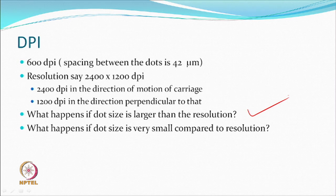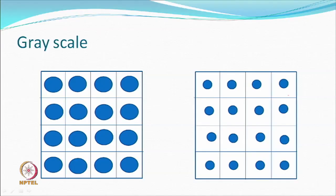If the drop size is very small compared to the resolution, you will have small dots placed in the center of each matrix cell. The effect will be a lighter shade because more background remains visible. So, resolution can remain the same, but drop size affects the overall appearance of the design.